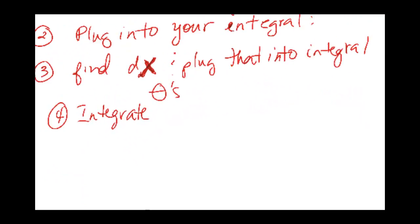After that you're going to substitute back in terms of x or y or whatever your original variable is, and you do that by setting up a triangle and using trig identities.